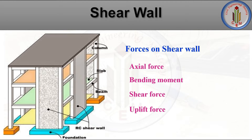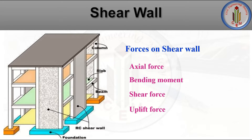The forces acting on a shear wall are axial force, bending moment, shear force, and uplift force. Axial force is the vertical force transferred to the shear wall by beams and slabs. Shear force is produced due to ground movement and lateral forces such as wind load and earthquake forces, acting throughout the height of the wall. The shear wall resists shear force acting parallel to its plane by cantilever action.